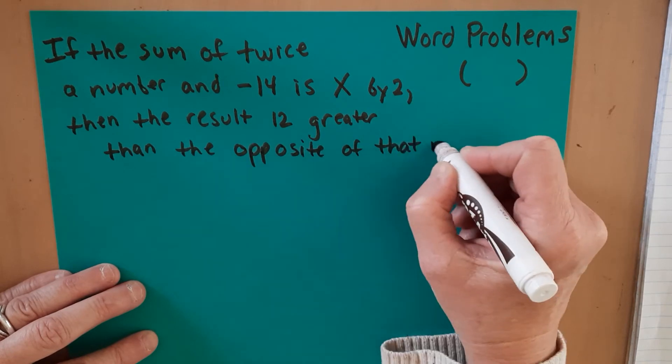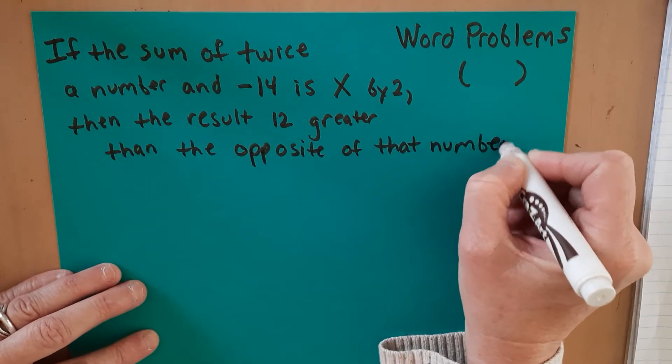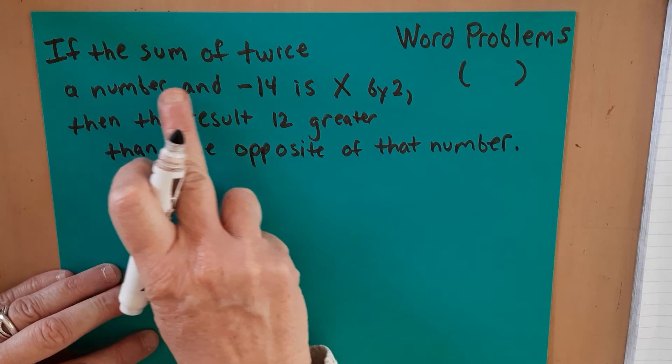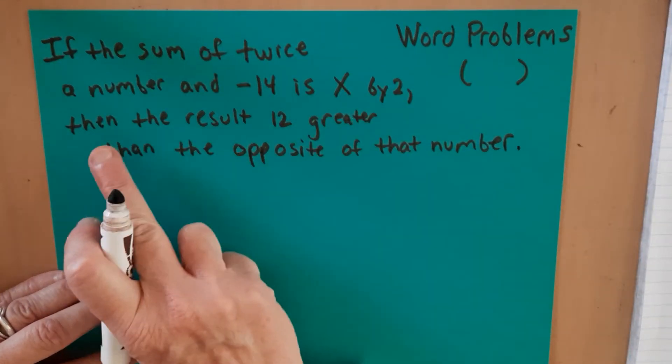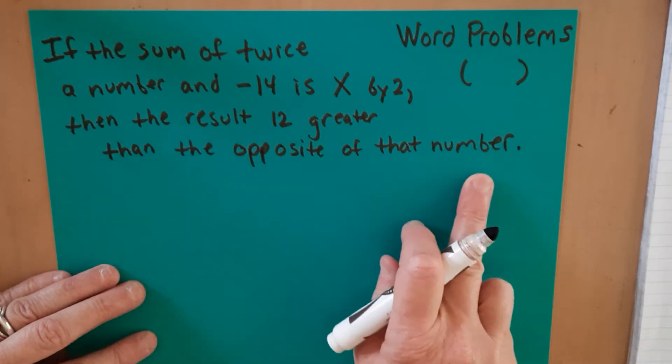So we have to just take this one small part at a time. Let's just make sure we got this right. If the sum of twice a number and negative 14 is multiplied by 2, then the result is 12 greater than the opposite of the number.